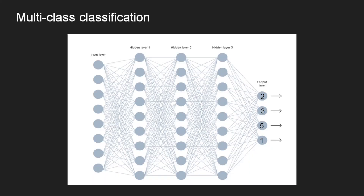Let us consider the example we saw in the previous video — this is the case of multiclass classification. My outputs for this case should be probabilities, and the sum of those probabilities should be equal to 1. These are the values I am assuming I will get from the weighted sum. Now, if I apply sigmoid on top of this, I will get values like these. I cannot use these as probabilities because the sum of them is not equal to 1.